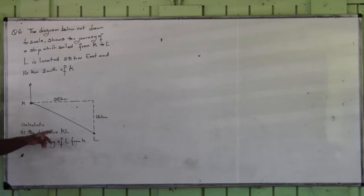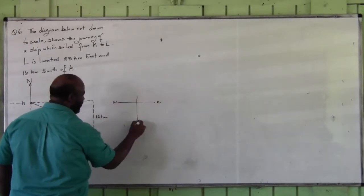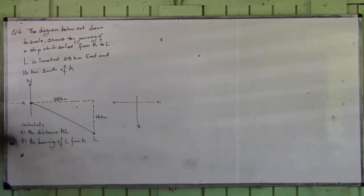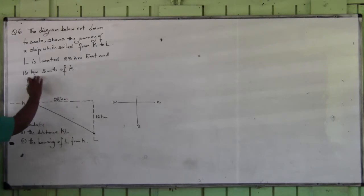A ship is sailing from K to L. We're told that L is located 28 kilometers east. So this is 28 kilometers east. If this is east, it means that this must be north, that's east, that's not. This is east, this is south, and this is west. So L is located 28 kilometers east, so from K you go east 28 kilometers.